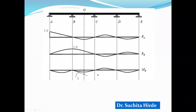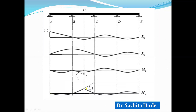In the same way, we can draw the qualitative ILD for bending moment at any section. Provide a hinge at that point and apply a unit rotation. If you apply unit rotation at point G, the beam deflects into a certain shape — that deflected shape is the qualitative ILD for bending moment at G, with the ordinate equal to 1. To get maximum sagging bending moment at G, place the load on spans BC and DE. To get maximum hogging bending moment, place the load on spans AB and CD.